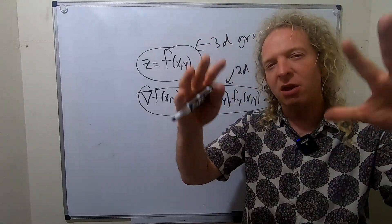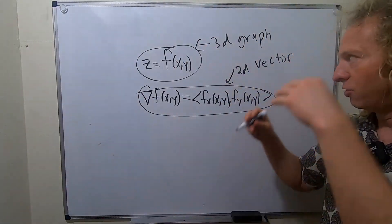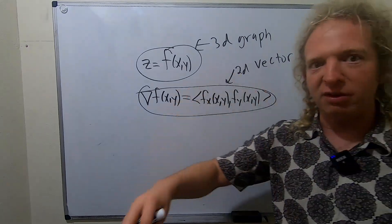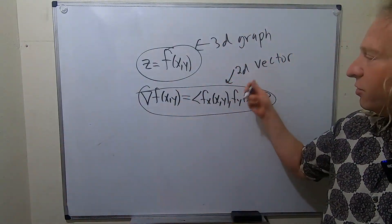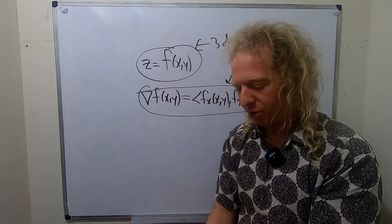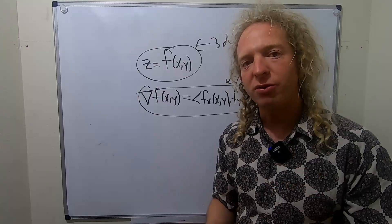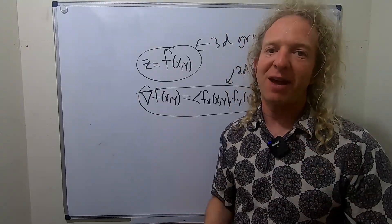So, again, if you're standing on rolling planes, you're standing on a 3D object, right? You're living in a 3D world. This is a 2D vector. It's on the ground. It will tell you which way to go in order to ascend as fast as possible.